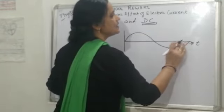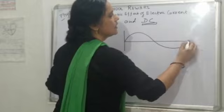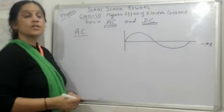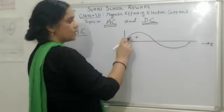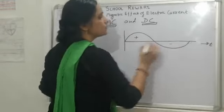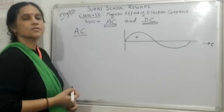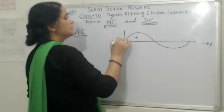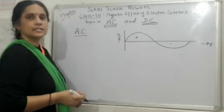In AC current, the direction of current changes. That means half rotation is for clockwise, positive sign is for clockwise, and half rotation is for anticlockwise, negative is for anticlockwise direction. It is the alternating current, AC current.